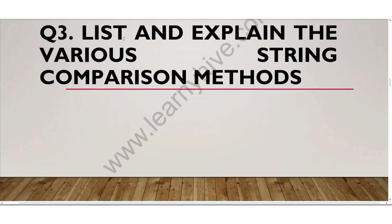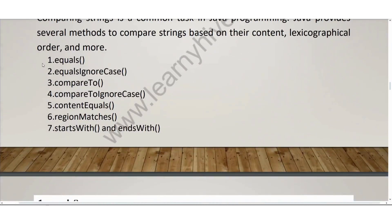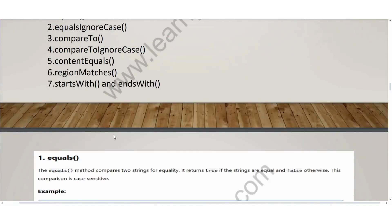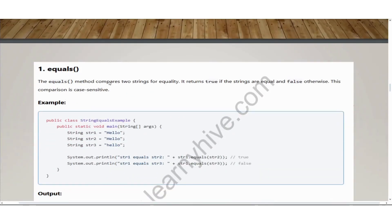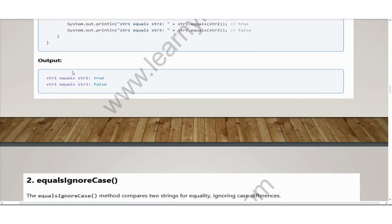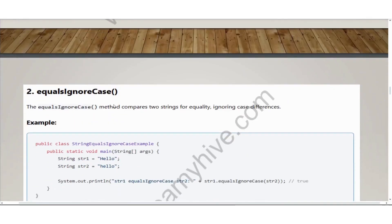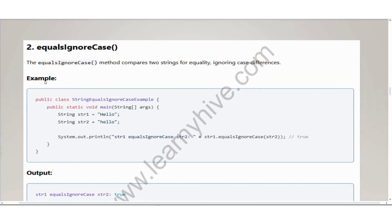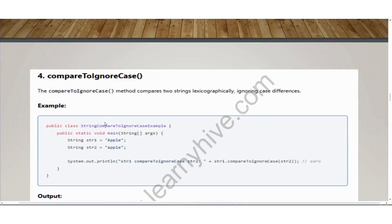Question three: list and explain the various string comparison methods. There are seven methods: equals, equalsIgnoreCase, compareTo, compareToIgnoreCase, contentEquals, regionMatches, startsWith, and endsWith. For the first one, equals, give a small definition and follow it up with an example program along with its output. Follow the same pattern for all the others.